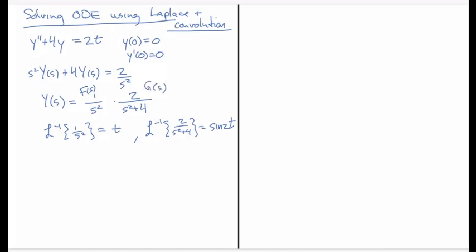Then according to the result on convolution from the previous video, I now know that y of t is equal to the convolution of f with g as a function of t. That means I take the integral from 0 to t of g of w times f of t minus w dw.